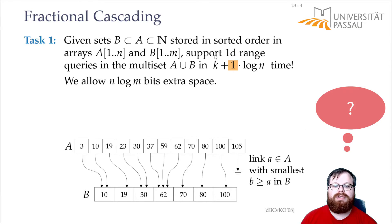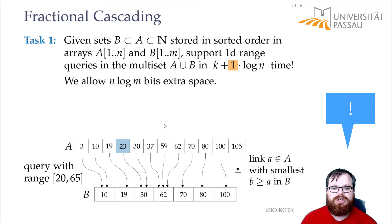Now, how would we do a 1D range query here in k plus 1 times log n time? To do this, we do our binary search on A to find the first element that's at least as large as the 20. We can do that in exactly log n time by starting from the middle and then do our binary search. There are n elements, so we take log n time for this. This is exactly the 1 times log n.